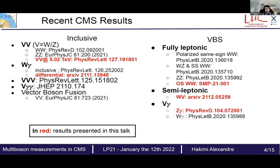In this talk I will focus on five papers: diboson production at 5.02 TeV, a differential measurement of W plus photon, and on the VBS side — opposite-sign WW fully leptonic, semi-leptonic WV, and Z plus photon production.